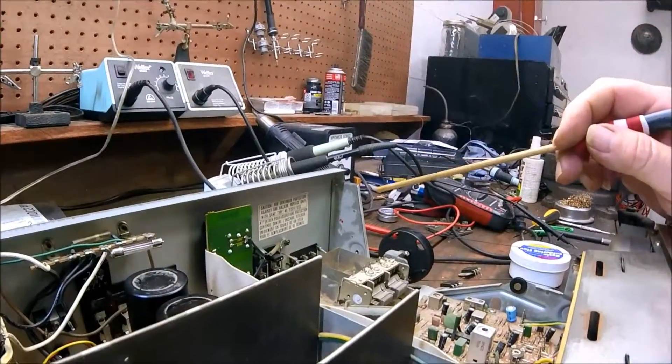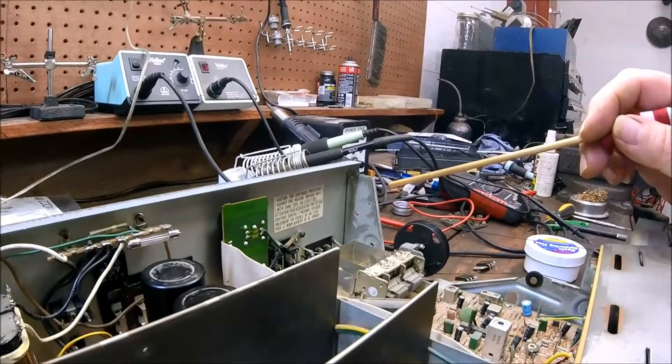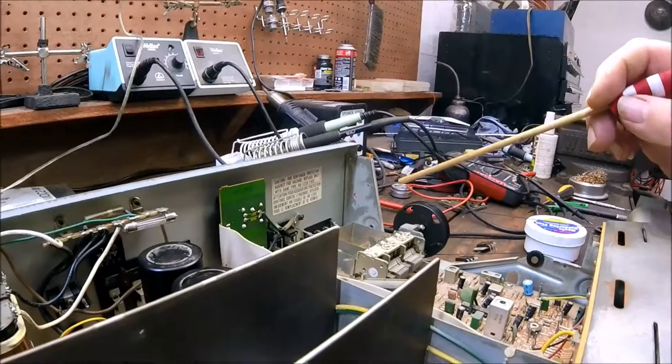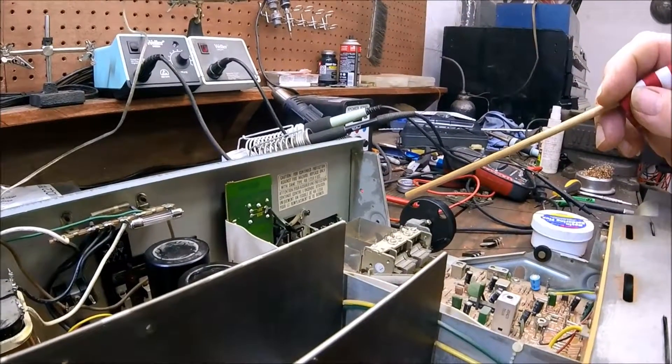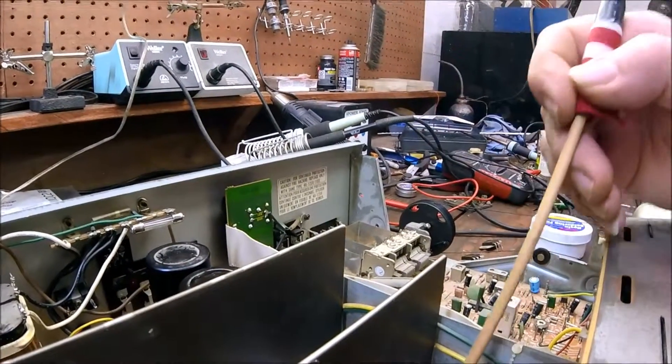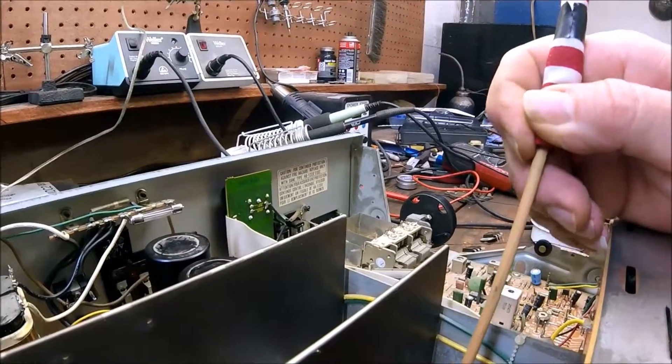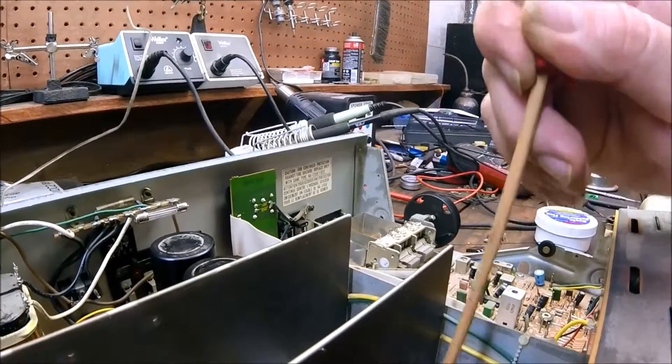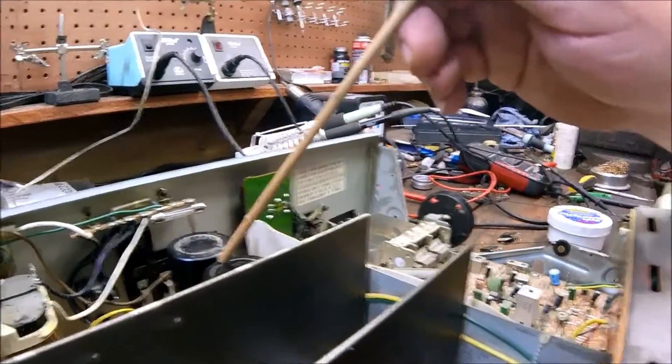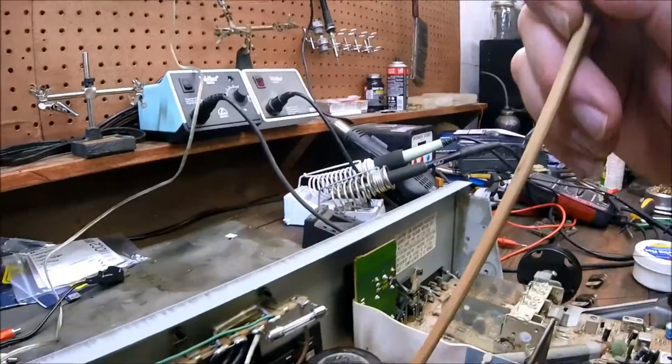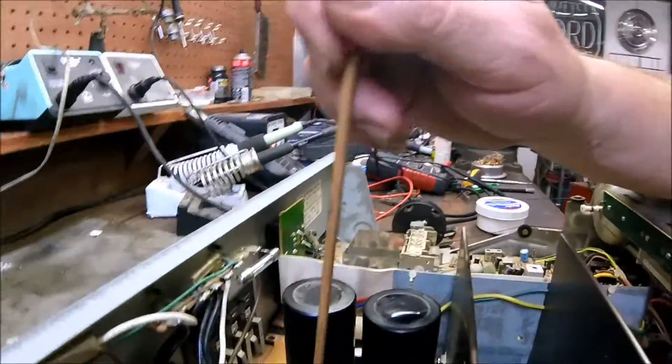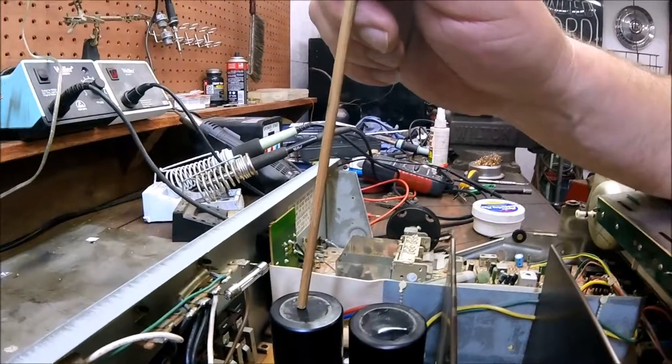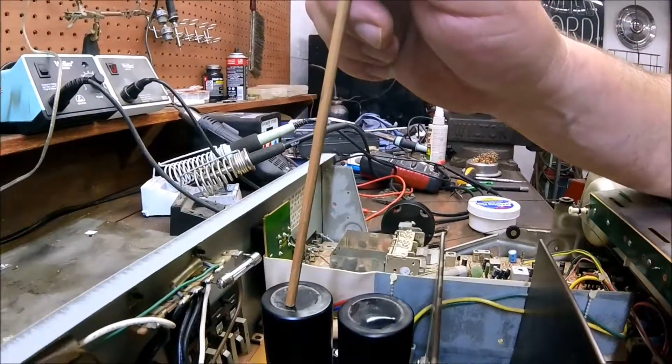But I can't get this bulb to quit glowing. So, any help would be appreciated guys. If you got any ideas what I should check next or maybe how to do some resistance checks from a device. Do I go from the device to chassis ground or do I go from the device to like say the negative on the cap? Or is it just when I'm in the power supply section, I use the negative of the cap as my ground point?